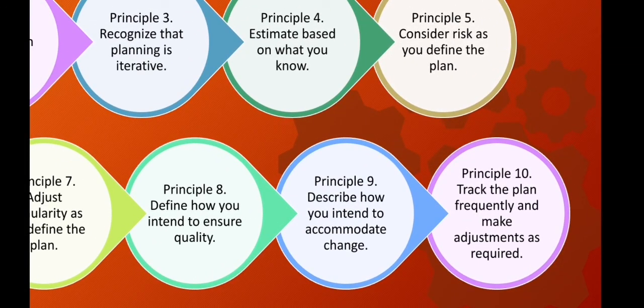Principle nine: describe how you intend to accommodate change. Even the best planning can be overtaken by uncontrolled change, so have plans for customer requests so that if they need to change something, you can adapt. Principle ten: track the plan frequently and make adjustments as required. Software projects fall behind schedule one day at a time, so look at the plan daily and keep track of your progress.